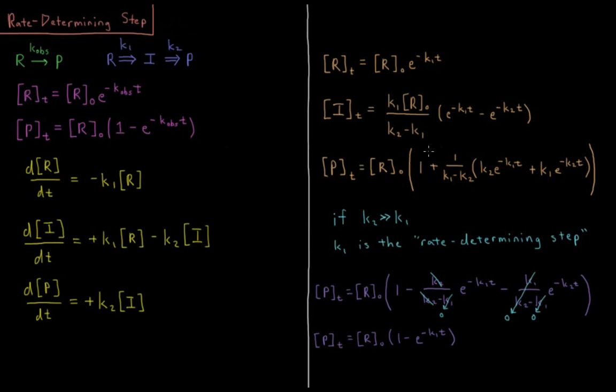Now, this is the most general case, and this looks fairly complicated, and it is. There are a lot of different scenarios that can result based off the varying values of k1 and k2. But let's look at one of those specific cases.